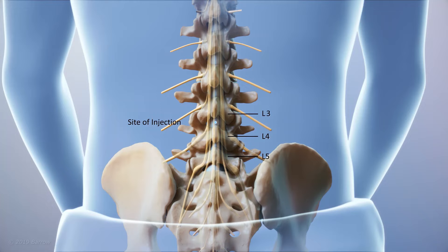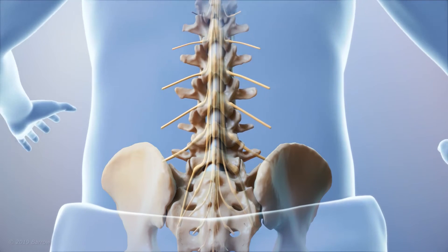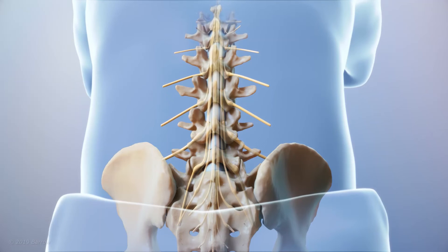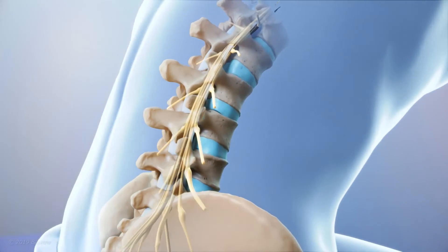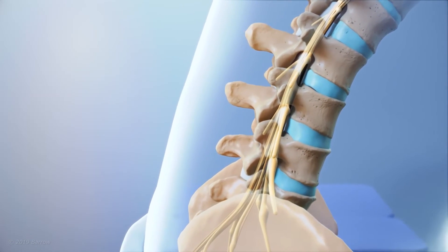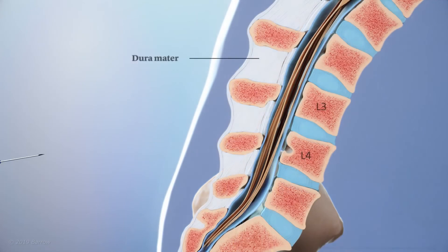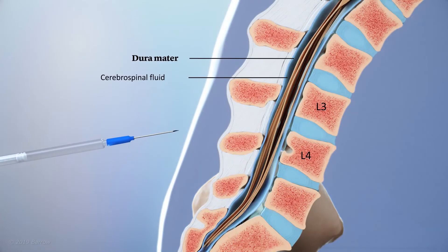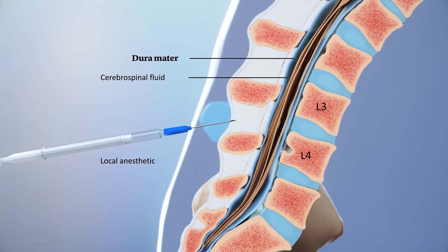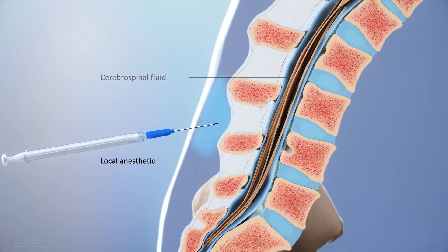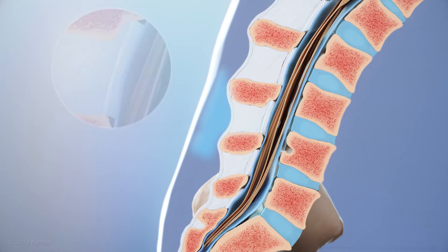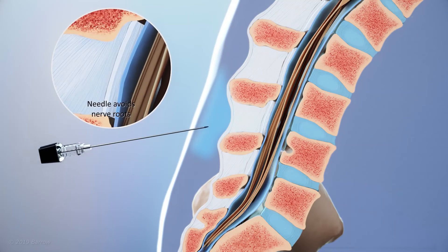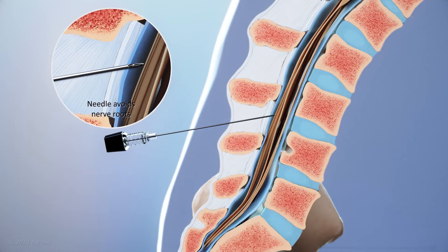The L3-L4 space is well below the conus medullaris so there is no risk of injury to the spinal cord. The patient usually leans over a table so that the back is arched and the spaces between the vertebrae are opened up to allow the needle to pass unobstructed. After sterilization of the skin, a small needle is used to inject a local anesthetic such as lidocaine into the skin and tissues overlying the spine.